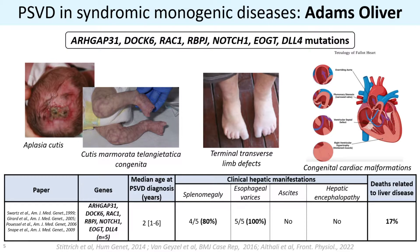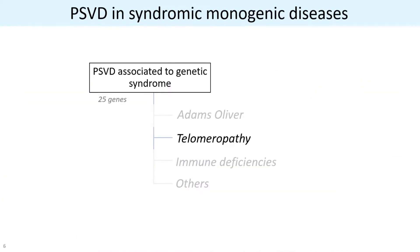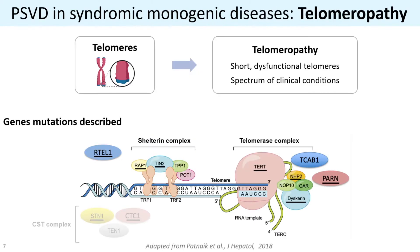In the case of Adams-Oliver, we found in the literature five cases reported where the median age of the PSVD diagnosis was two years old in children. As a remark, all of them presented esophageal varices, and three of them underwent gastrointestinal bleeding, causing the death of one patient. Splenomegaly was also frequently observed.